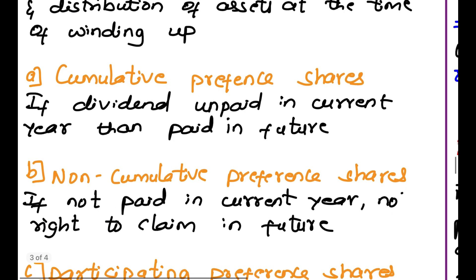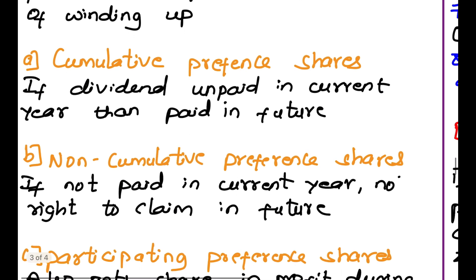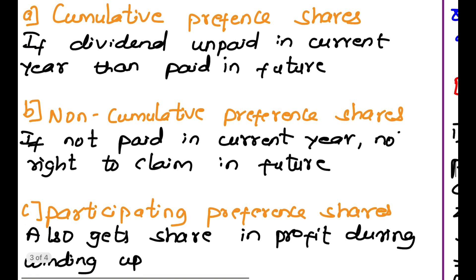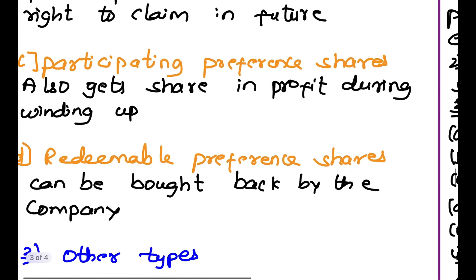The preference shares are divided into types. Cumulative preference shares: if a dividend is unpaid in the current year, it is paid in the future — they have a guarantee to get the dividend in future even if not paid this year. Non-cumulative preference shares: if not paid this year, they do not have the right to claim dividend in the next year. Participating preference shares: these shareholders also get profit during a winding up — not only the distribution of assets but if there is any extra profit left after distributing assets, they will also get a share in that profit.